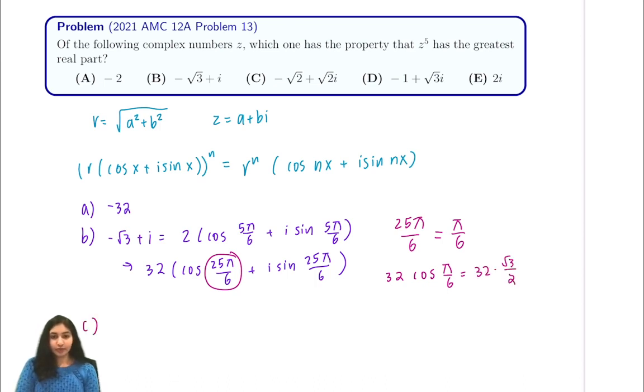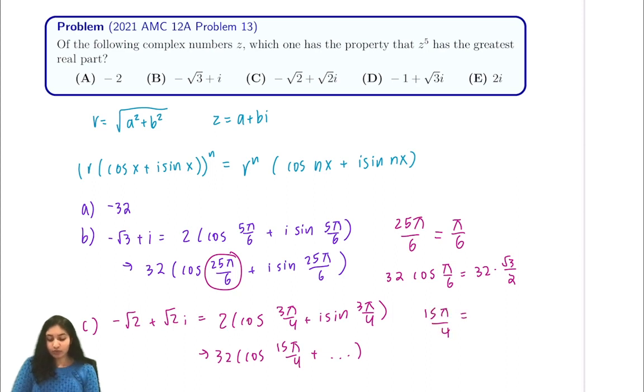Now we look at part C. In this problem we have negative square root of 2 plus square root of 2 times i. This is equal to 2 times the cosine of 3π over 4 plus i sine of 3π over 4. By de Moivre's, this is 32 times cosine of 15π over 4, and that's all we really care about. 15π over 4 is congruent to 3π over 4 in our unit circle.